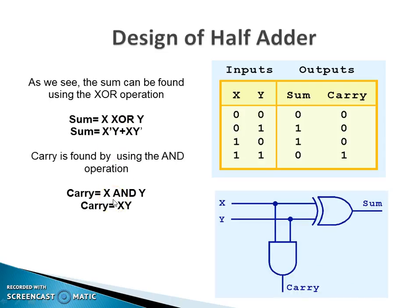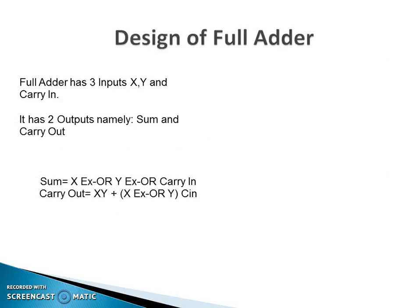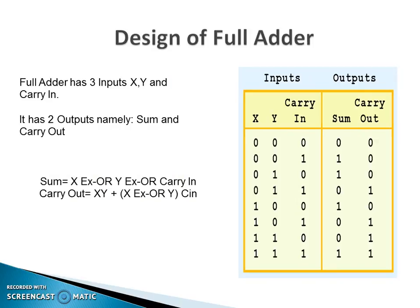With these two expressions I can draw the diagram for the half adder: x and y are inputs, carry and sum are outputs. Sum equals x XOR y, and carry equals x AND y. This is how you design a half adder. This knowledge can be extended to design what is known as the full adder. A full adder is a combinational circuit with three inputs: x, y, and carry-in, and two outputs: sum and carry-out. The truth table of the full adder is as shown in the figure — since there are three inputs, there are eight possible combinations.